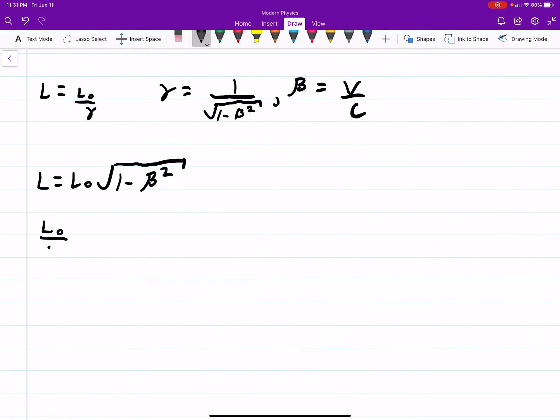So this is really L-naught over 2 equals L-naught square root of 1 minus beta squared. Obviously, if we divide out, the L-naughts drop,